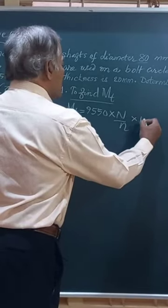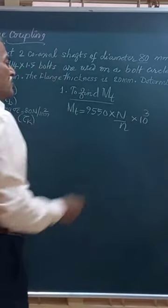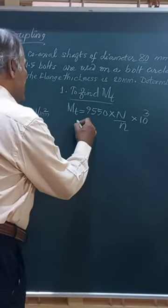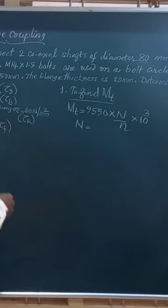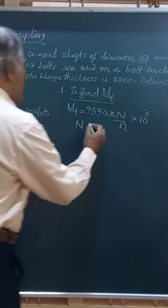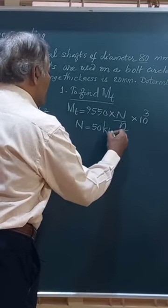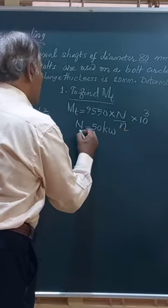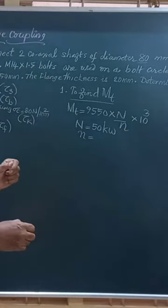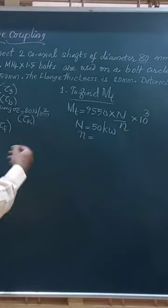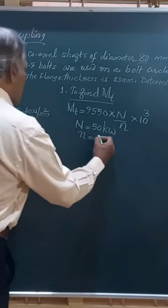The capital N is the power transmitted, which is given as 50 kW. The small n is the speed of rotation of the coupling, given as 200 rpm.